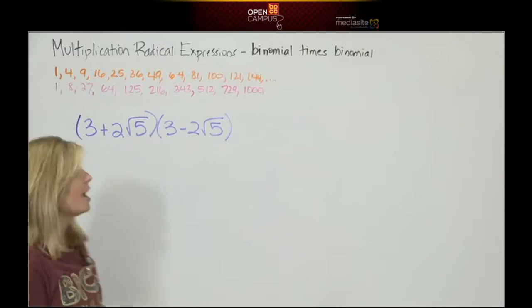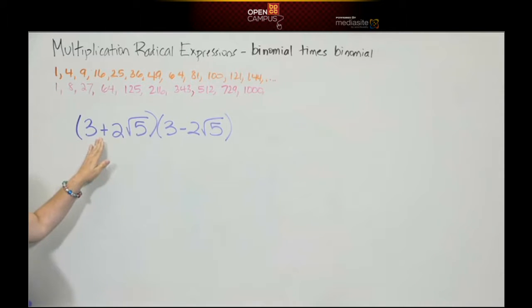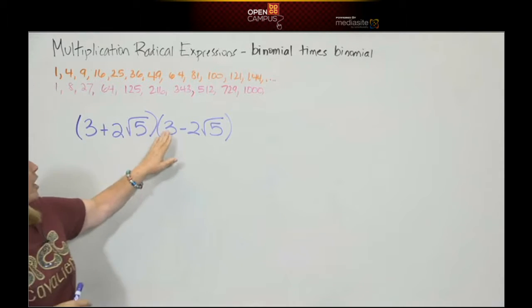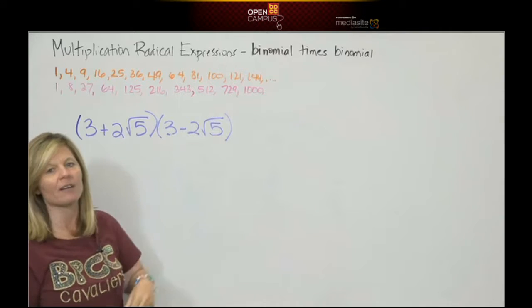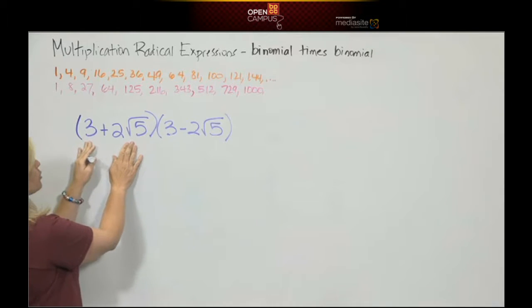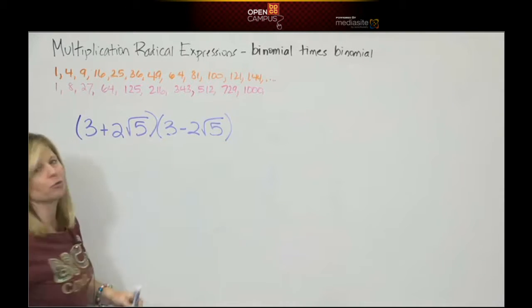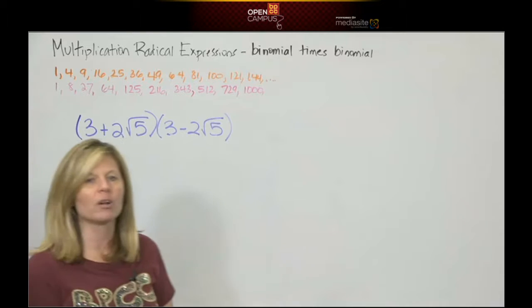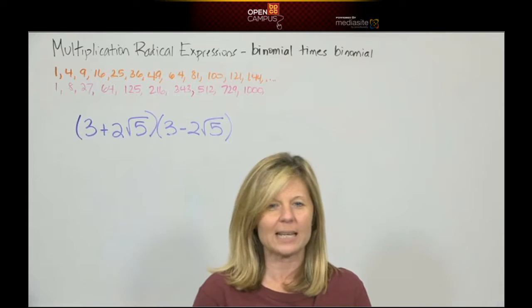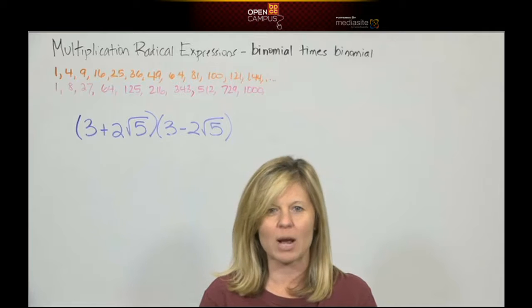Okay, so if you look here, I have an expression 3 plus 2 square roots of 5 times 3 minus 2 square roots of 5. It's obviously a binomial, 2 terms times a binomial, 2 terms. If we followed order of operations, we could not do what's inside because we can't add and subtract these terms.